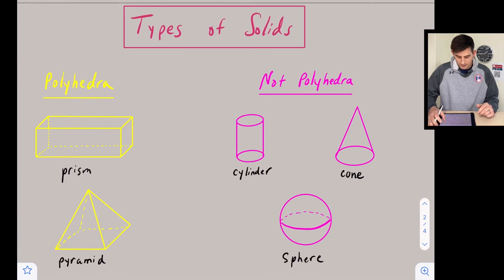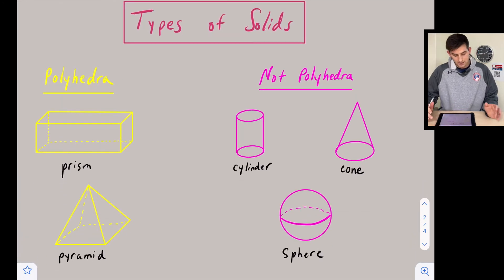Now let's talk about the two types we mentioned: polyhedra or not polyhedra. Over here on the left, we see some polyhedrons. First, we're going to start with a prism.